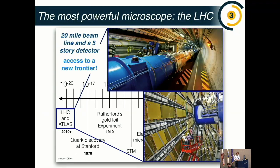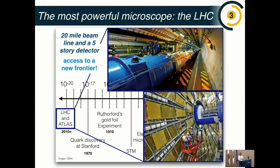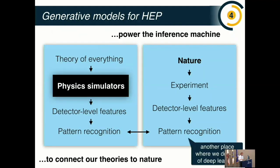The most powerful microscope ever built is the Large Hadron Collider — the top picture here is a segment of this 20-plus-mile accelerator in Geneva, Switzerland. It collides protons at very high energy and they're observed by a very powerful camera, one of which is the Atlas detector shown in the bottom right — a five-story detector a hundred meters underground with something like a hundred million readout channels. You can think of it like a very granular, very fast, pixelated digital camera.